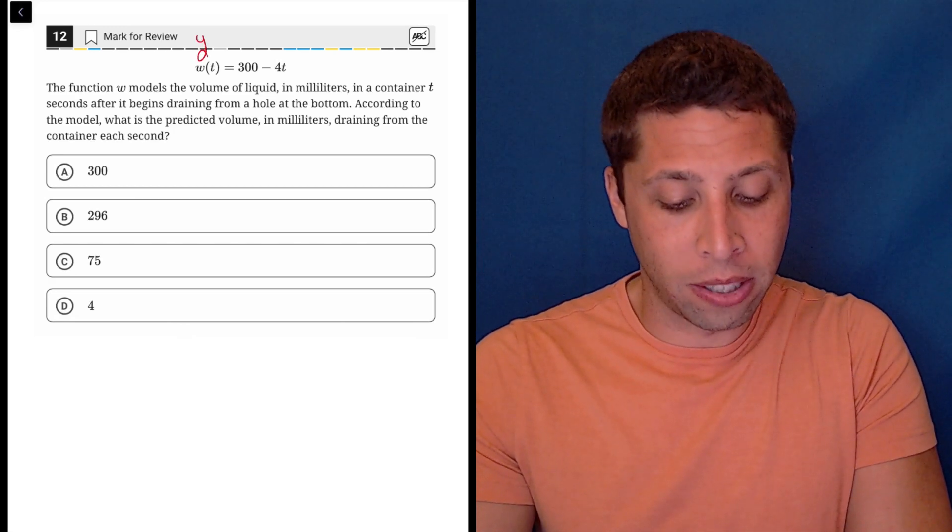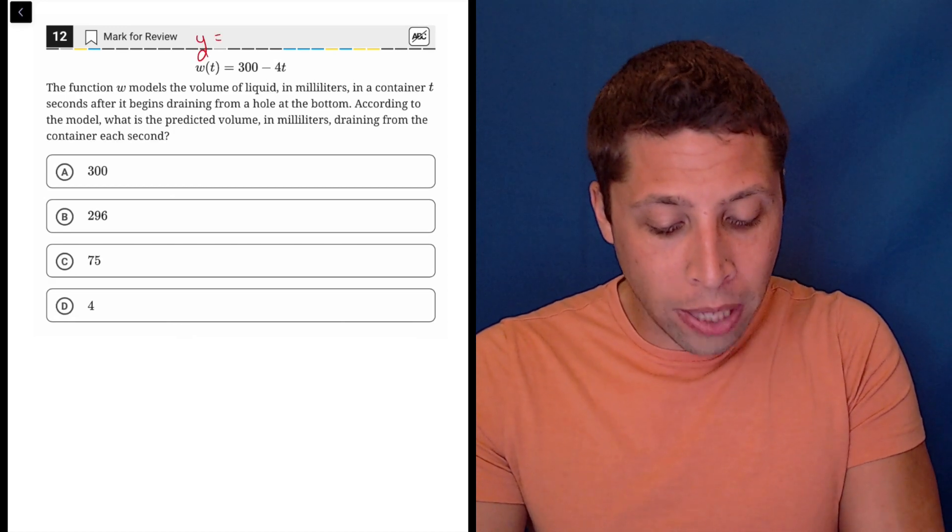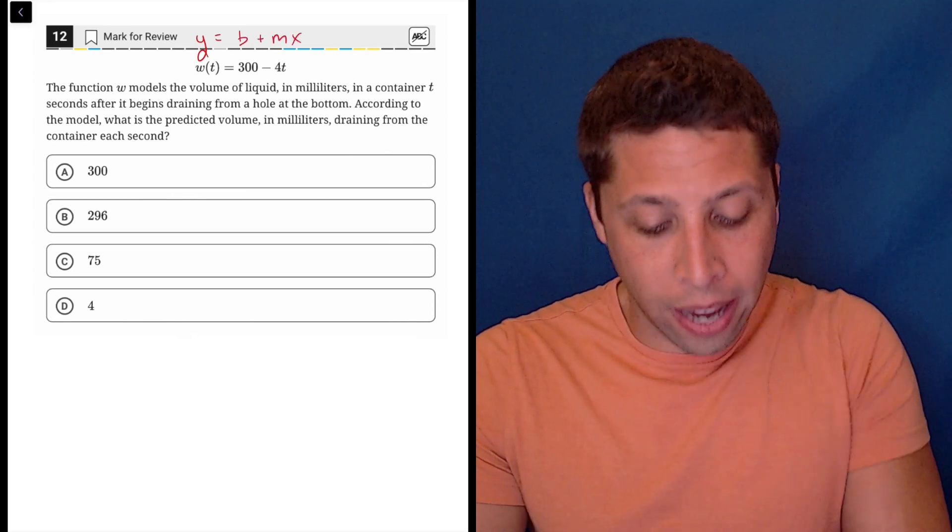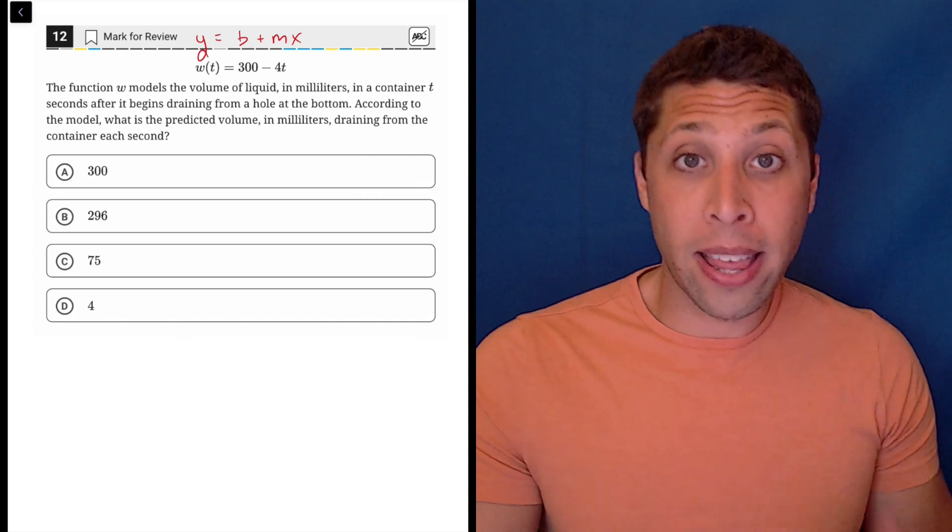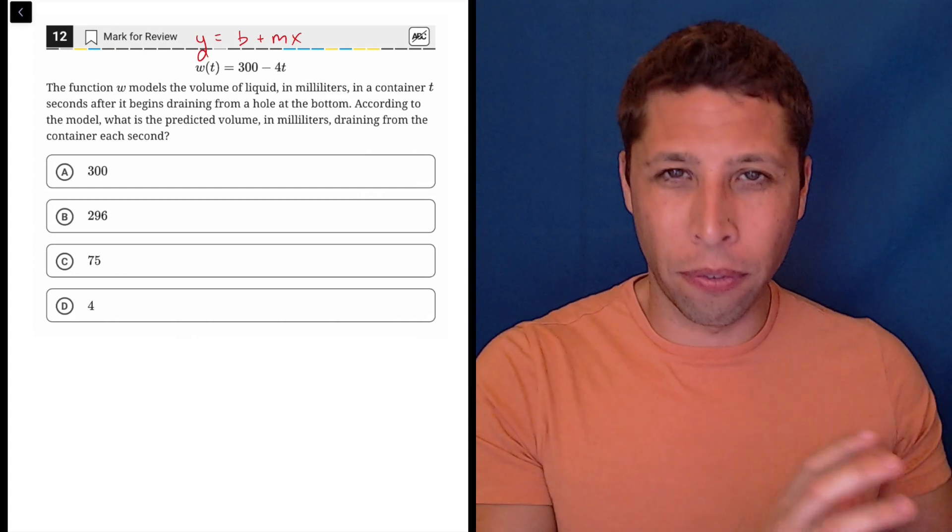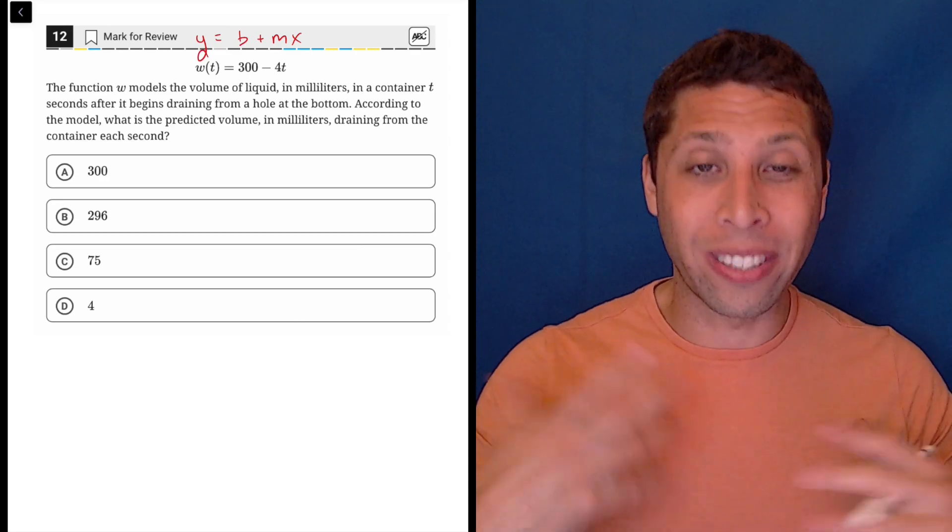We've got y in place of this w(t), and they also flipped it so that my mx is over here and then my b is kind of in reverse. But that's okay, that doesn't bother me because y equals mx plus b isn't really about the order of things per se, it's more about what's attached to what, right?